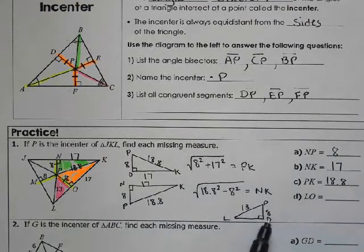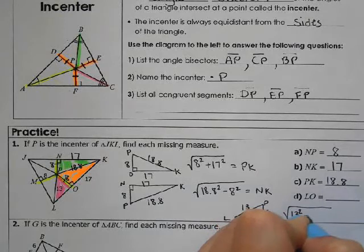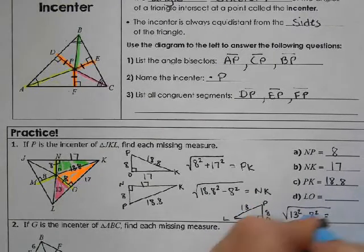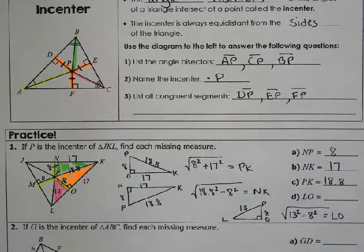So the hypotenuse squared minus the leg squared will give us LO. There's a lot to do with these. That's about 10.2.